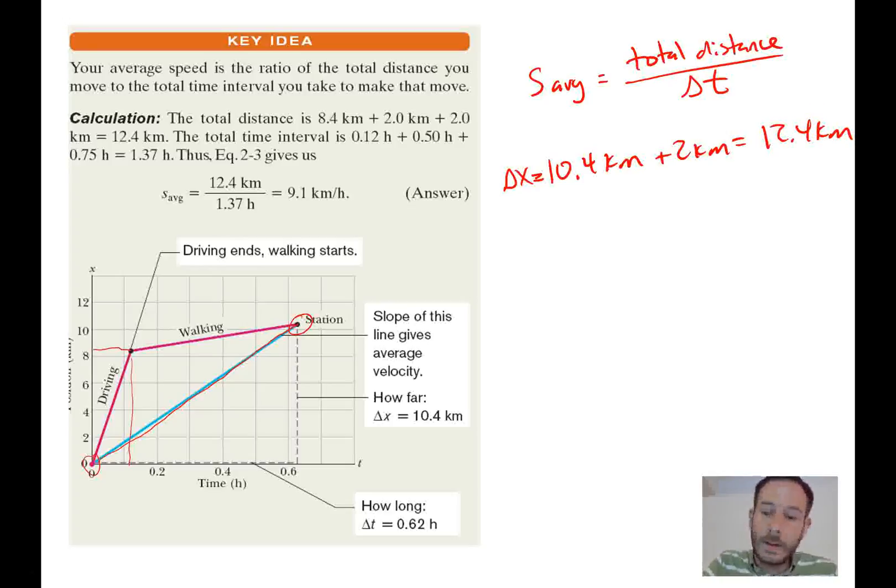All right. For delta T, we're going to use what they gave us before, which was 0.12 hours plus 0.5 hours plus another 45 minutes to get back, which is 0.75 hours. And again, this is going to be our delta T. So that whole thing is going to take us 1.37 hours.